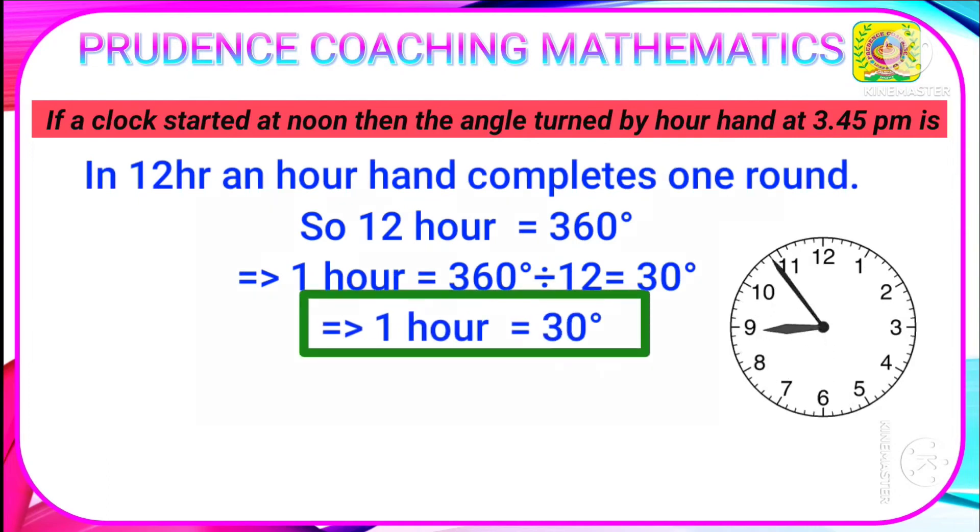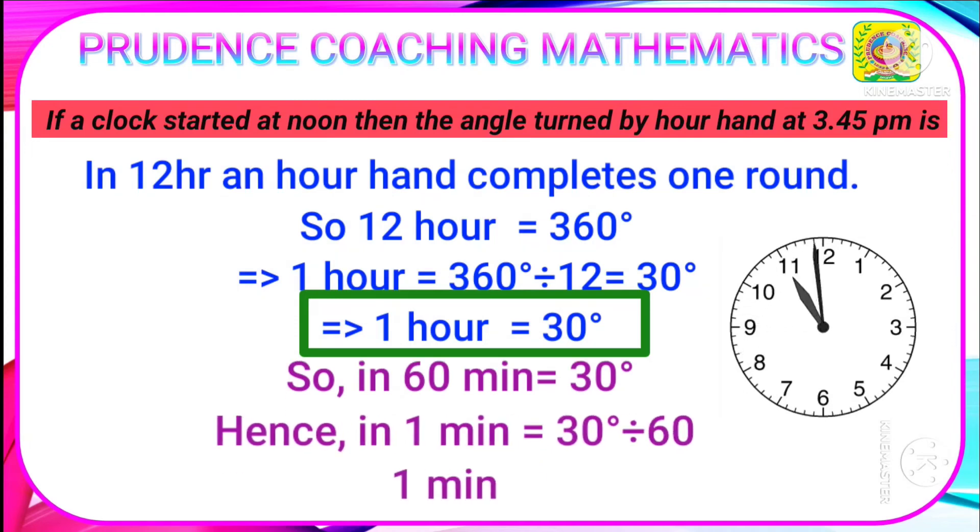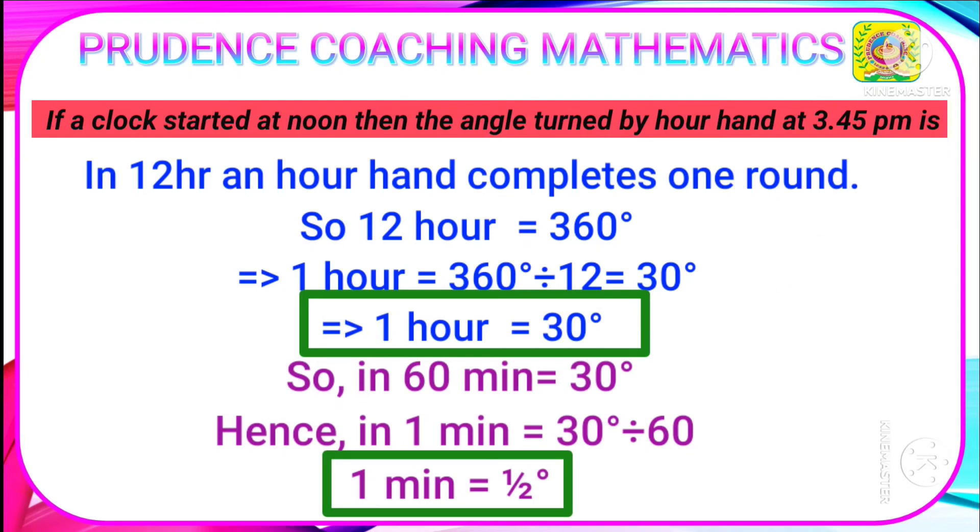We know 1 hour equals 60 minutes. So in 60 minutes also, it will cover 30 degrees. In 1 minute, it will cover 30 degrees divided by 60, that is half a degree. From this, we can conclude that in 1 hour it makes an angle of 30 degrees, and in 1 minute it makes an angle of half a degree.